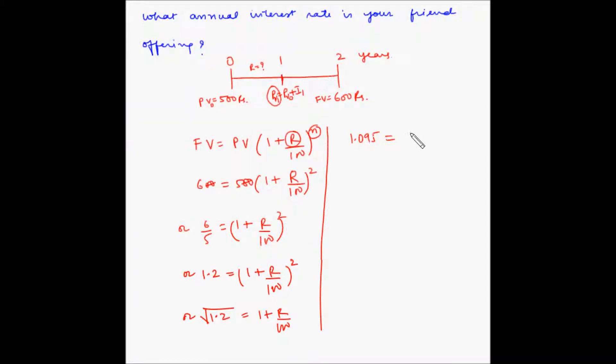So 1.2 square root, the left hand side is 1.095 and this is equal to 1 + r/100. So 1 will bring on the other side, so r/100 is equal to 1.095 minus 1, or r/100 is equal to 0.095.